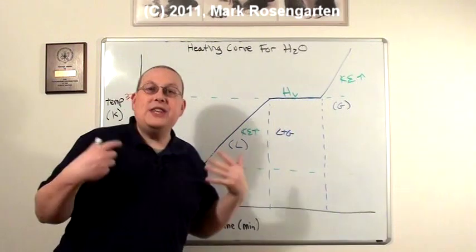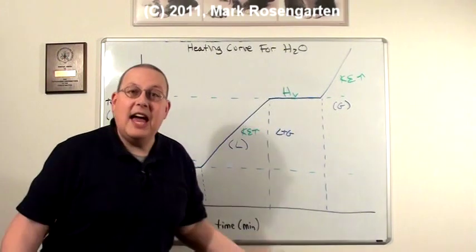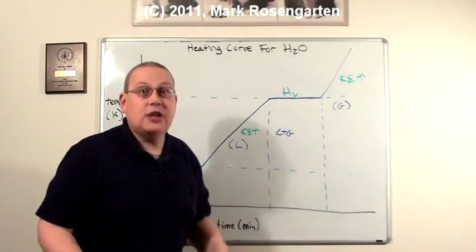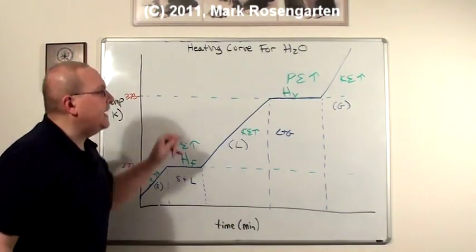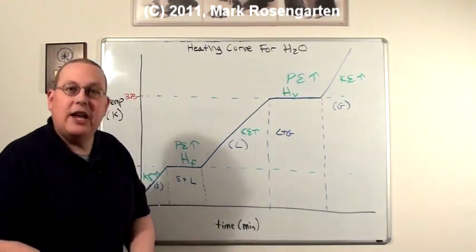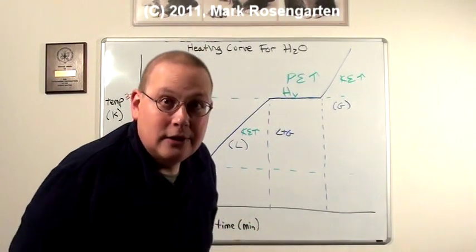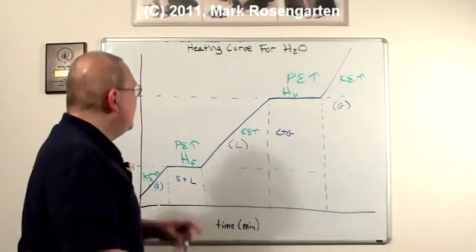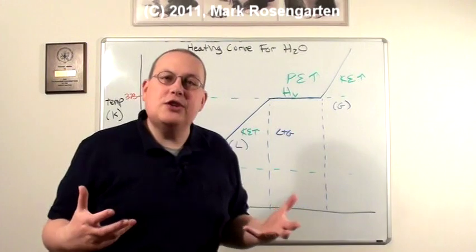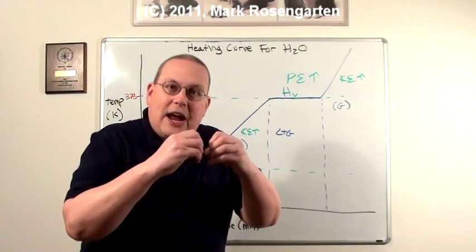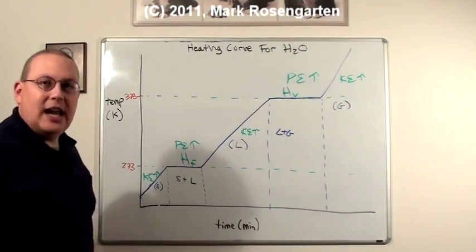However, during the phase change, when temperature doesn't change, kinetic energy is remaining constant. Well, you're still adding heat. And if it's not kinetic energy that's changing, it's potential energy that's changing. That's why heat of fusion and heat of vaporization are measured in joules per gram. Joules, a unit of potential energy. Because during a phase change, the potential energy is changing. What potential energy? Well, you're adding potential energy to break the attractive forces between the molecules, to separate them. So, that's basically what's going on here during a heating curve.